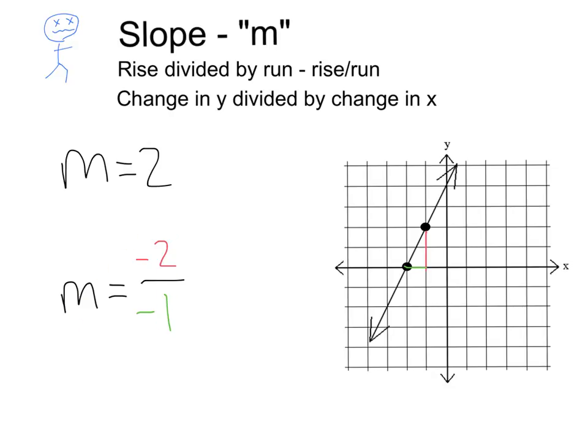So, my slope is negative 2 over negative 1, which can simplify to 2, which is the same answer that we got before. So, again, it doesn't make a difference where you start or what points you pick on the line. It's always going to work itself out to the same slope.